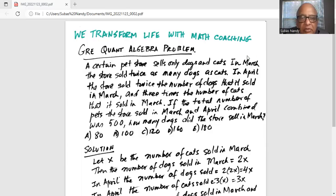In April the store sold twice the number of dogs that it sold in March and three times the number of cats that it sold in March.